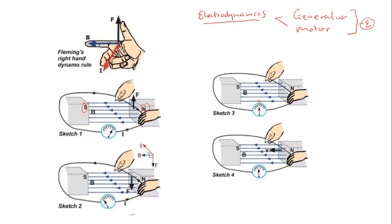In electrodynamics, we are going to use this concept once more to generate electricity when we study generators. Generators are devices that generate EMF or current in a current-carrying conductor. A generator works on this principle — a coil within a magnetic field must be moved. This is also where Fleming's right-hand rule, or the dynamo rule, comes in.